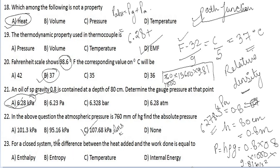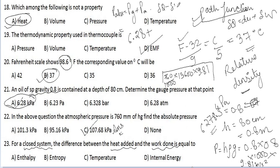For a closed system, the difference between the heat added and the work done is equal to — blank. This is from the first law of thermodynamics: δQ = dU + δW. Rearranging, δQ − δW = dU, and dU is the internal energy. So the correct answer is change in internal energy.